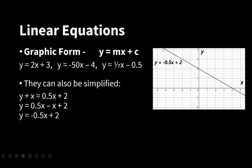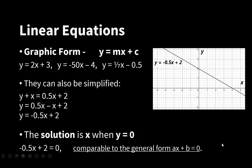This is the equation that is represented in this particular graph. The solution for x is when y equals 0. So if we replace this y with 0, we get minus 0.5x plus 2 equals 0, and that's comparable to the general form that we discussed earlier.